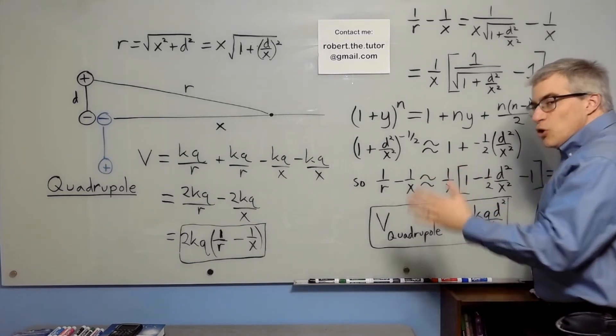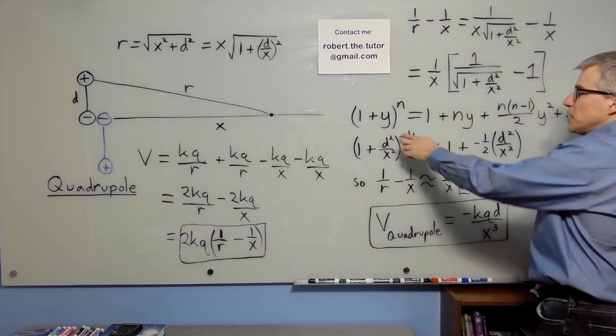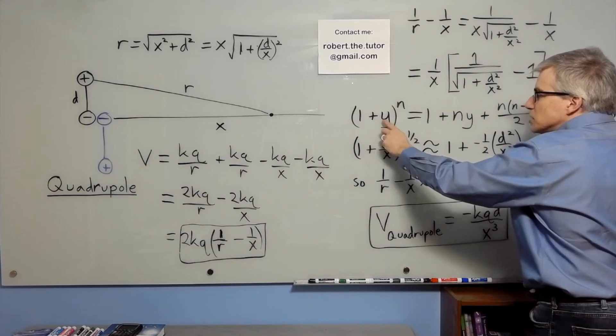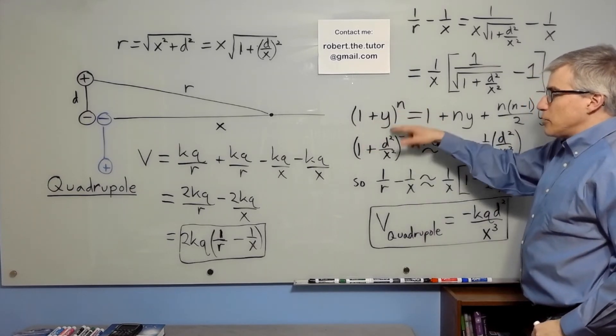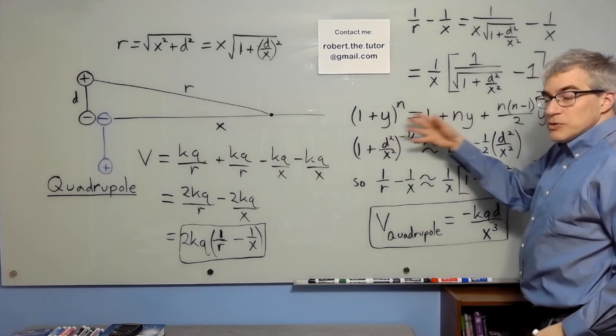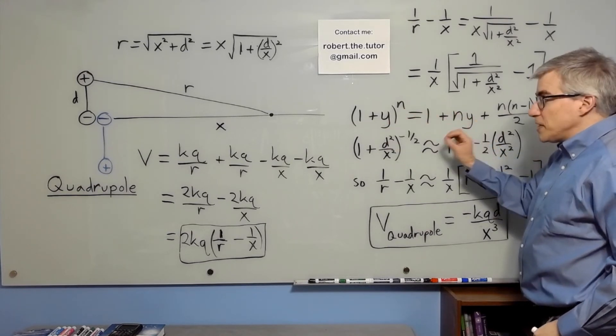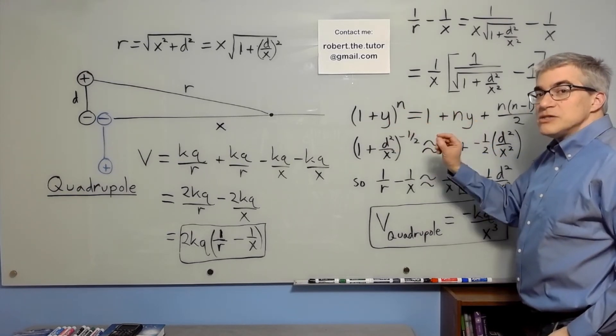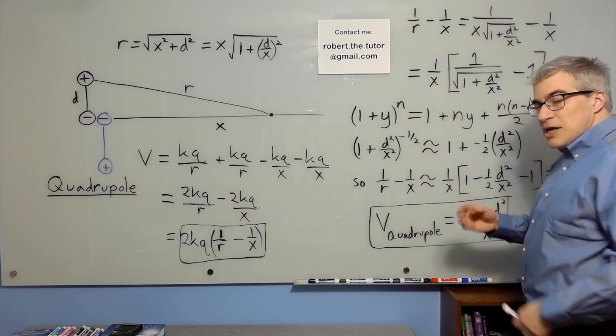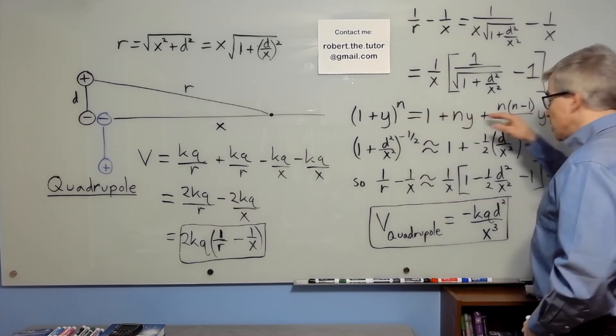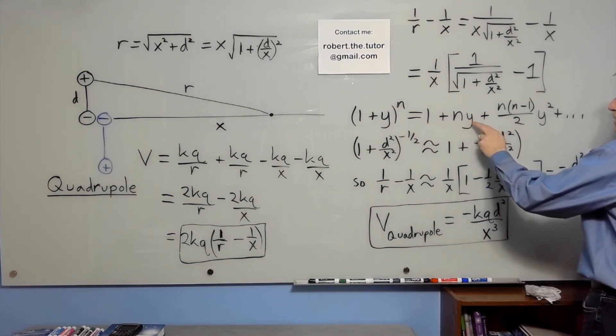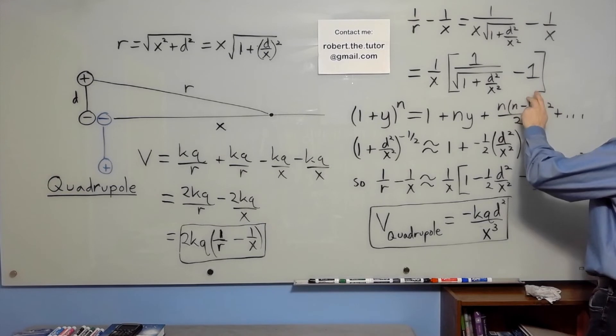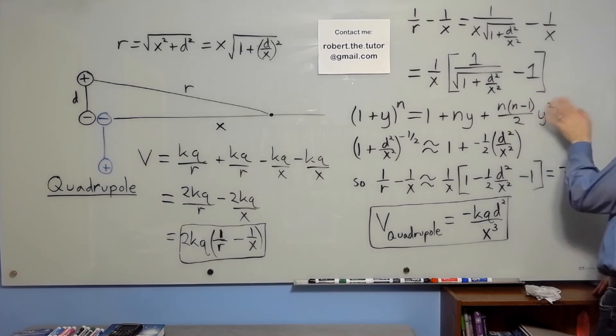So we use what's called the binomial theorem. You can do an expansion of 1 plus y to the n. People usually think of that in terms of squared or cubed or to the fourth, and you can expand it out. The cool thing is, this works even if n is not an integer. If it's not an integer, then this doesn't stop, it goes on forever. In general, it's 1 plus n times y plus n times n minus 1 over 2y squared plus more terms.